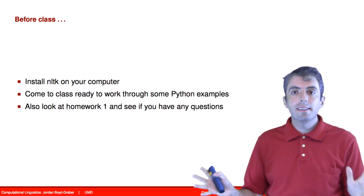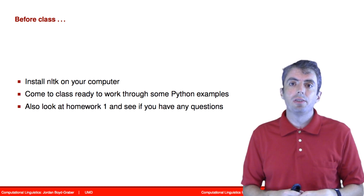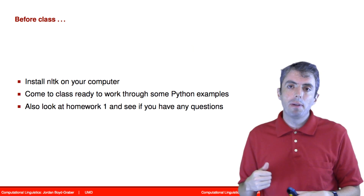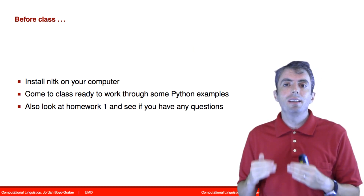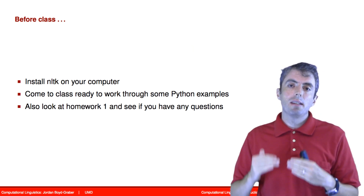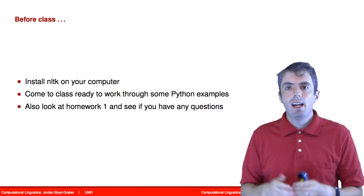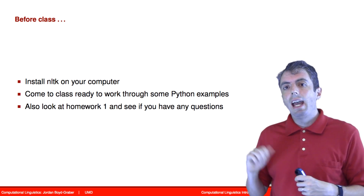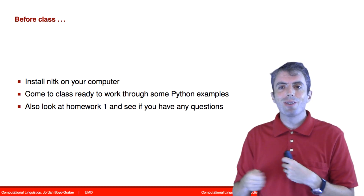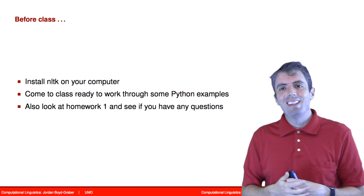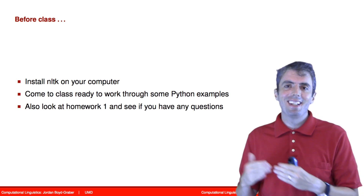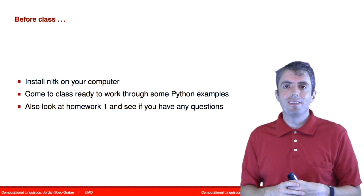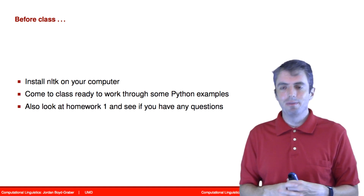So that's it for our whirlwind introduction. For the first class, please be prepared — come to class with NLTK and Python installed on your computer. Have a look at homework one and make sure that you're all set to do that. And be prepared to work through some simple examples of both Python and probability that will serve as the foundation for the rest of this course. Thanks and see you soon.